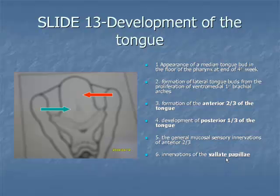Item 6: the glossopharyngeal nerve, the nerve of the third pharyngeal arch, supplies the taste buds in the vallate papillae and most of the posterior one-third of the tongue mucosal surface. The superior laryngeal branch of the vagus nerve, the nerve of the fourth pharyngeal arch, innervates a small part of the tongue mucosal surface anterior to the epiglottis.